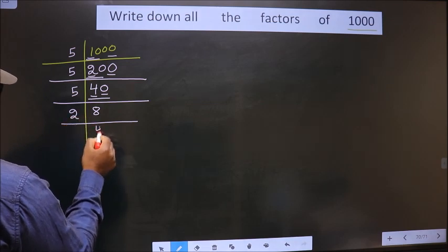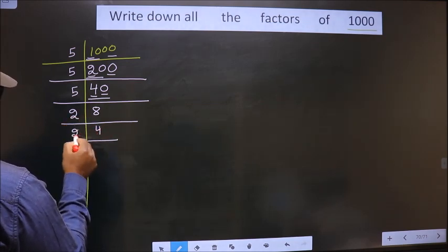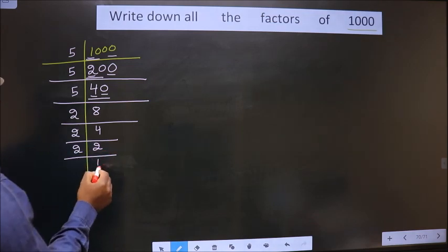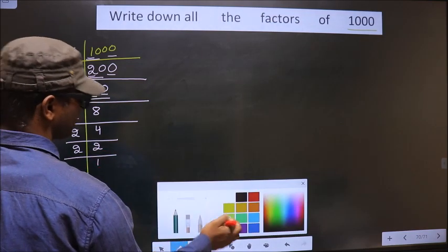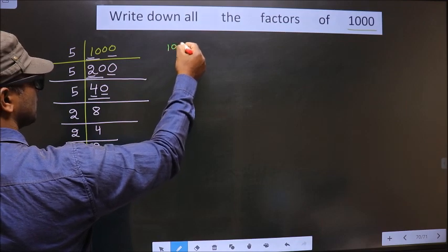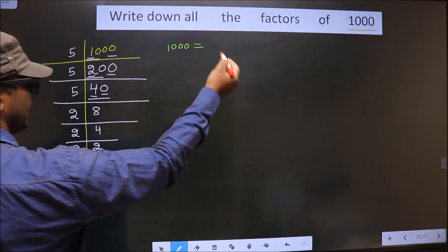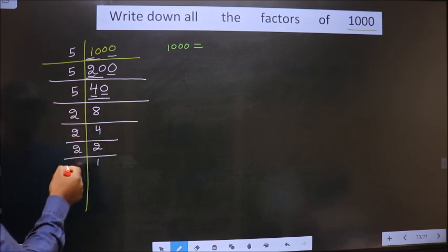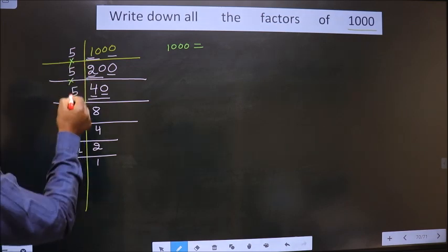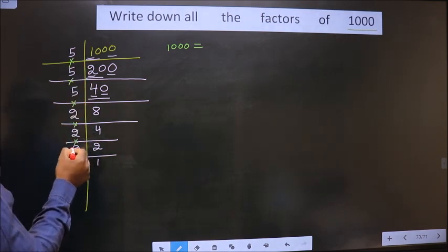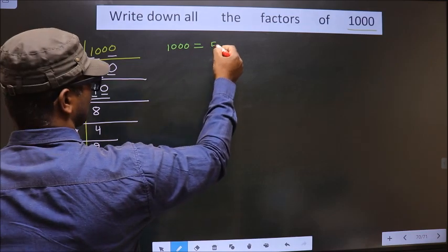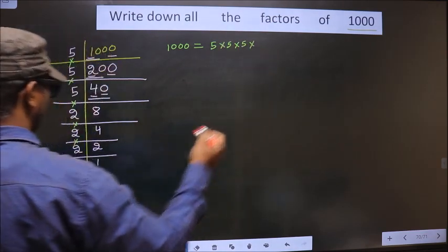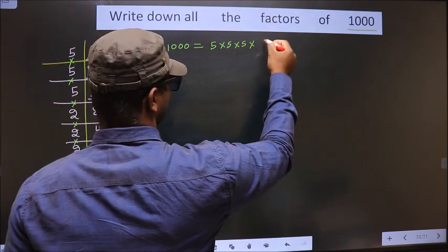Now we got 8. 8 is 2 fours. 4 is 2 twos. Now 2 is a prime number, so we take 2 and 1. So 1000 is equal to the product of these numbers, that is 5 × 5 × 5 × 2 × 2 × 2.